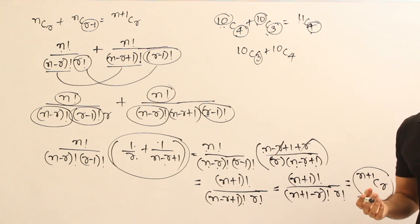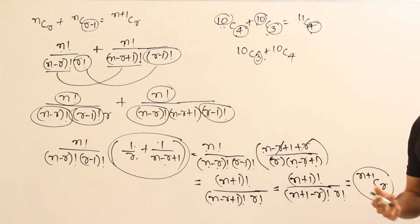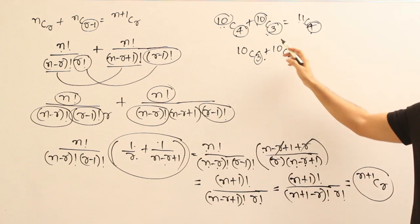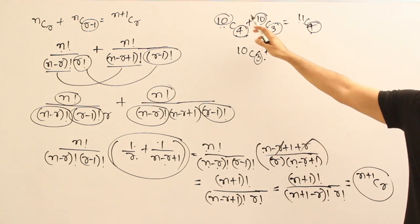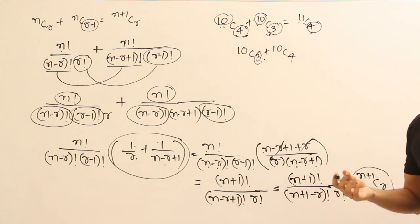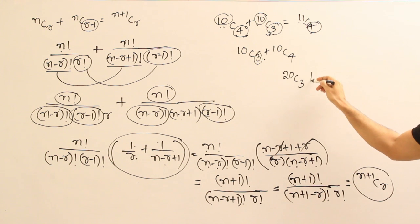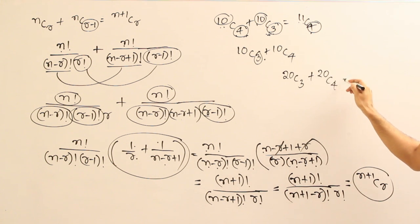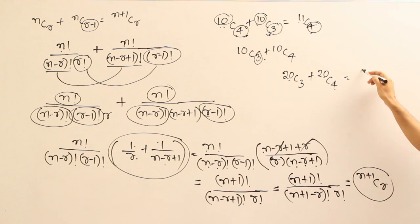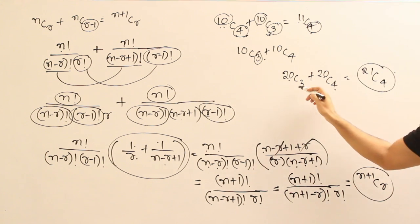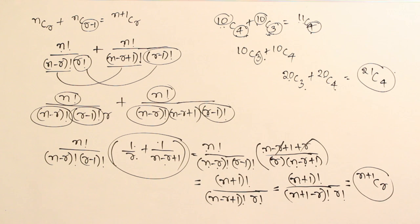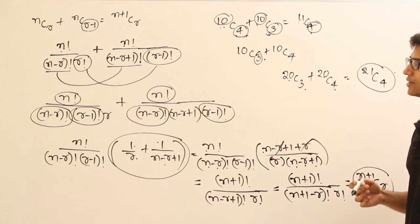One easy way to remember: look at the two C-terms, find the maximum value in the denominators, put that as the new denominator, and add 1 to the top number. For example, 20C3 + 20C4: add 1 to get 21, and the maximum denominator value is 4, so the answer is 21C4. That's how you can remember it. This is one of the important properties we will use while solving problems.